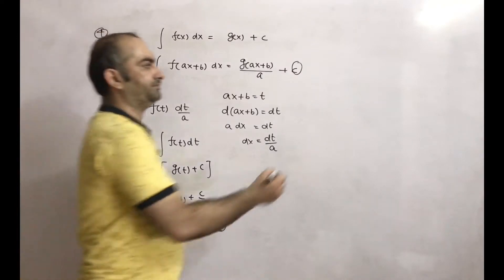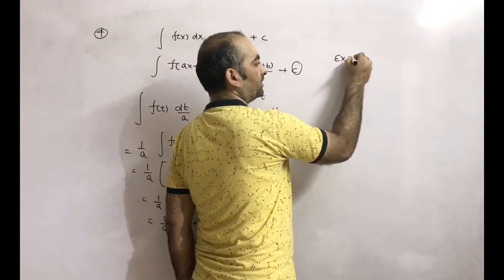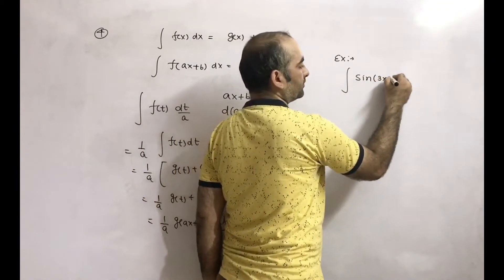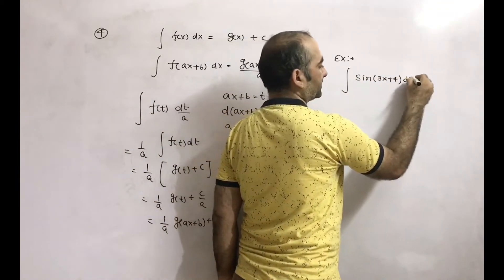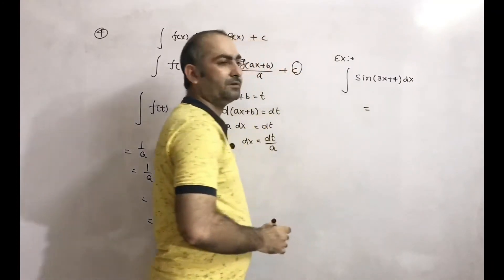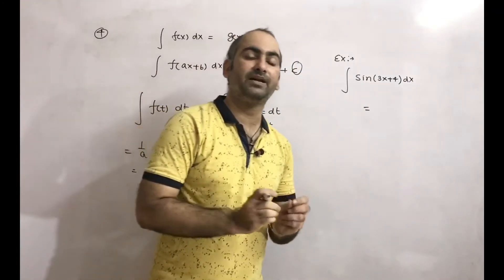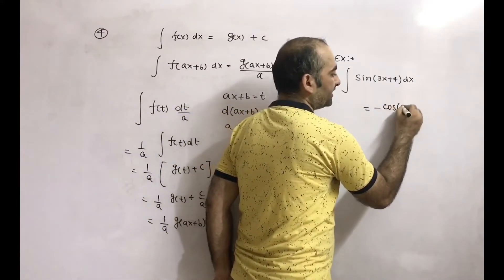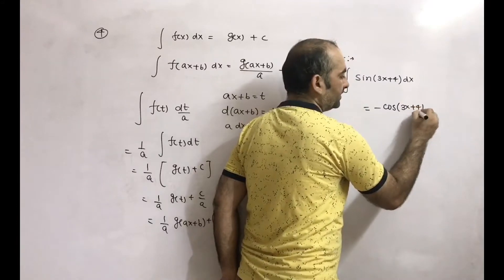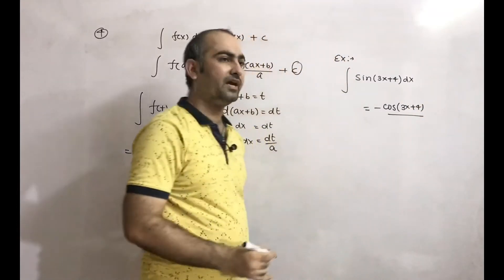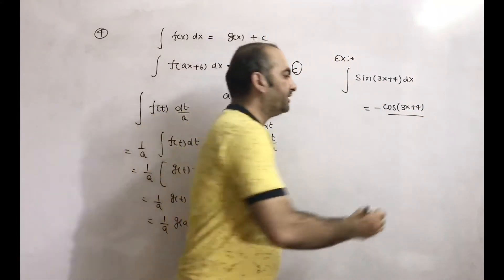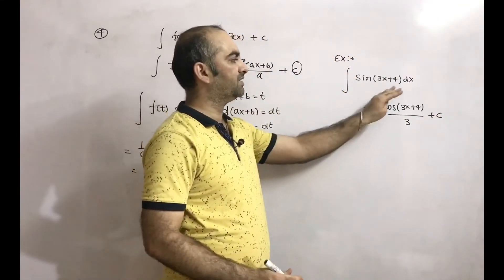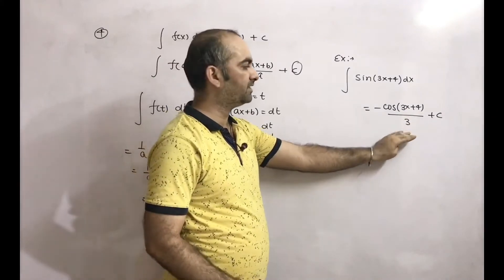For example, if I do integration of sin(3x+4)dx. So this integration will be: sin(x) integrates to -cos(x), so here sin integrates to give -cos(3x+4) as it is. Then divide by the x coefficient, which is 3. So divide by 3 plus c. So integration of sin(3x+4) is -cos(3x+4) divided by 3.